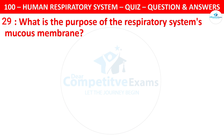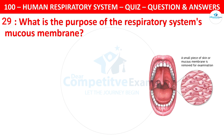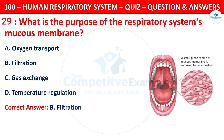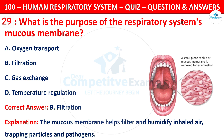What is the purpose of the respiratory system's mucous membrane? The options are: oxygen transport, filtration, gas exchange, or temperature regulation. The correct answer is B — filtration. The mucous membrane helps to filter and humidify inhaled air, trapping particles and pathogens.